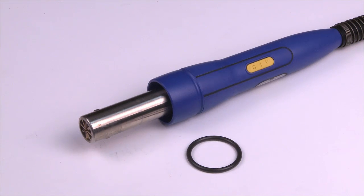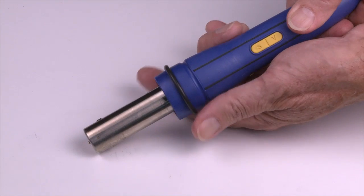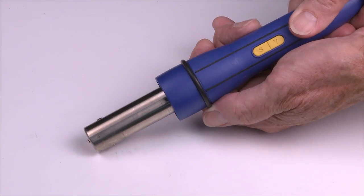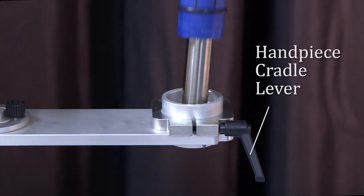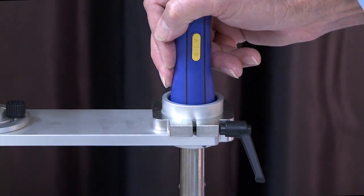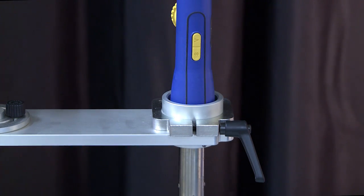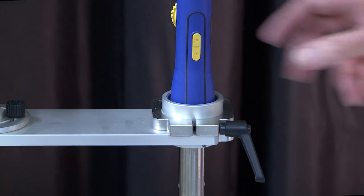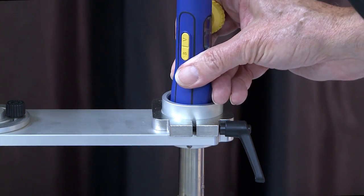Use the O-ring to secure the FR-811 handpiece into the handpiece holder. Place the O-ring in the ring slot on the handpiece, loosen the handpiece cradle lever, and push the handpiece into the holder until the O-ring is seated in the bottom of the cradle. The handpiece can now be manually rotated in the cradle for theta alignment.